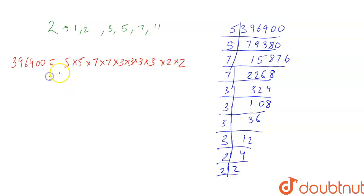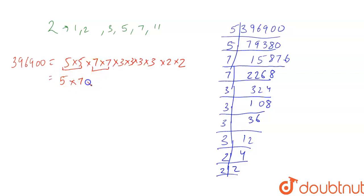So now we'll take out pairs because it is a square root. So 5 and 5 — one 5 comes out; 7 and 7 — one 7 comes out; 3 and 3 — one 3 comes out; another 3 and 3 — one more 3 comes out; and 2 and 2 — one 2 comes out. So the square root is 5 × 7 × 3 × 3 × 2 = 630.